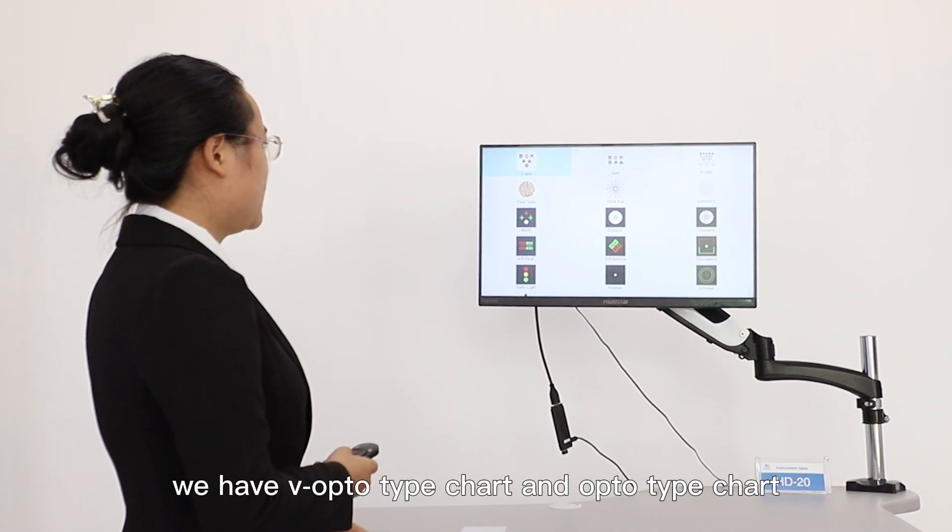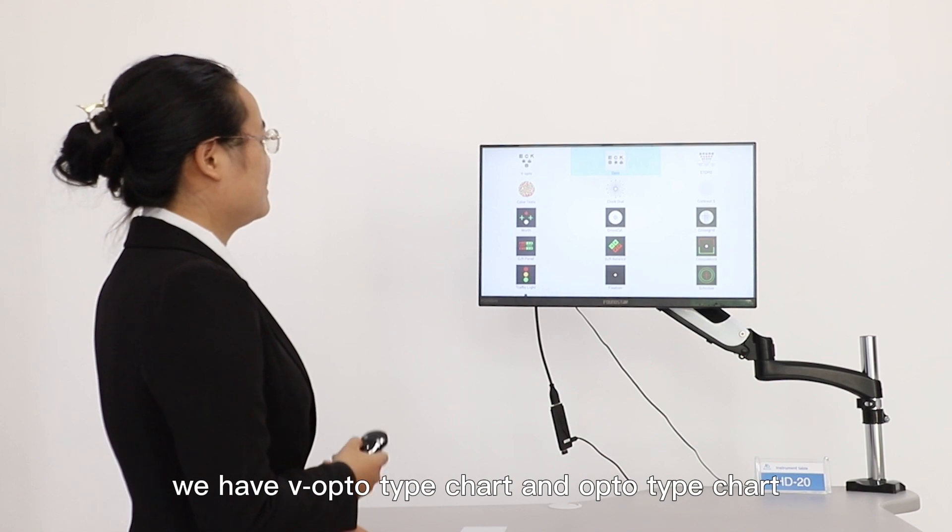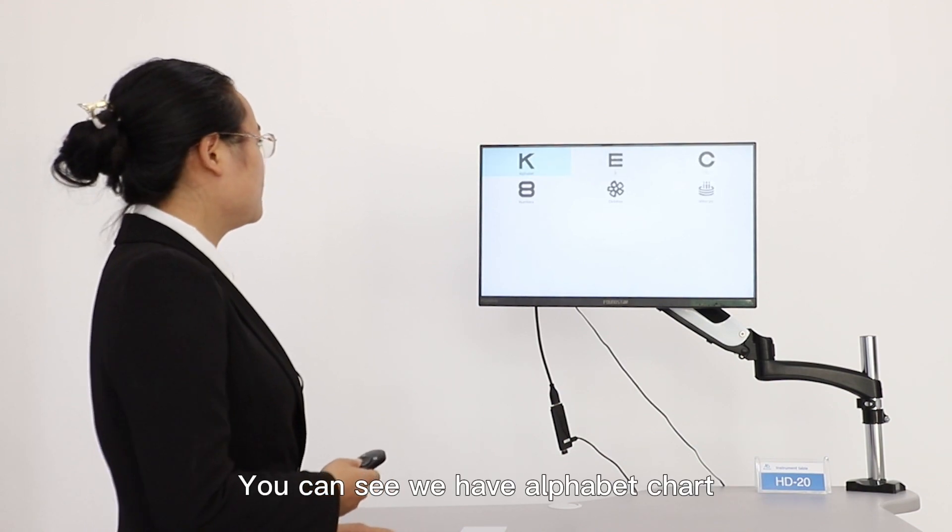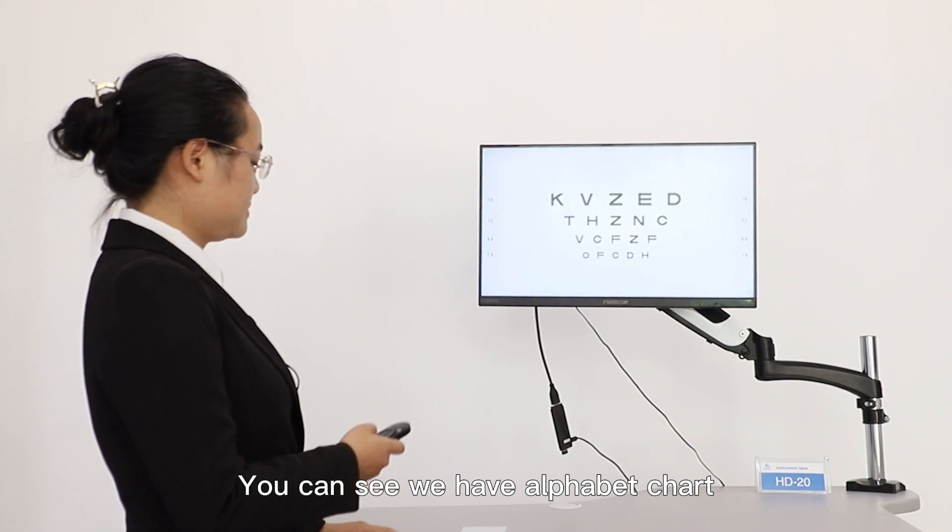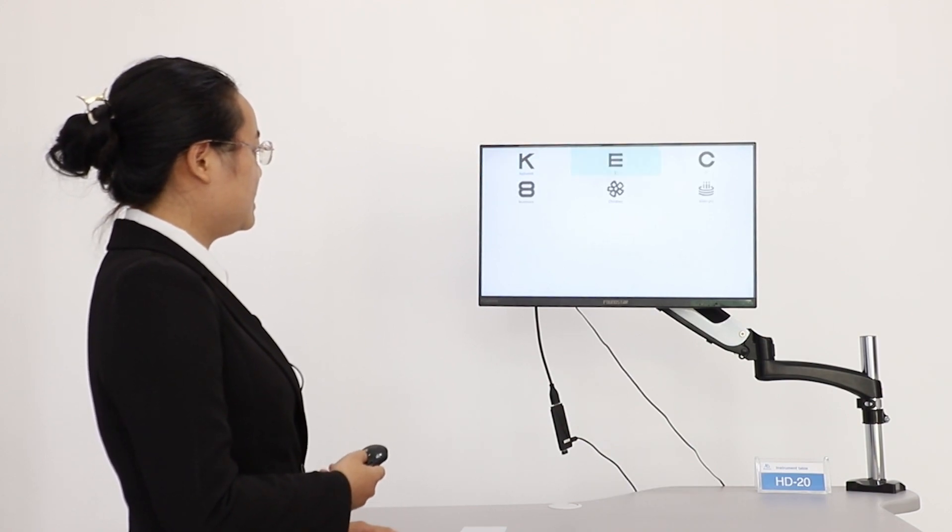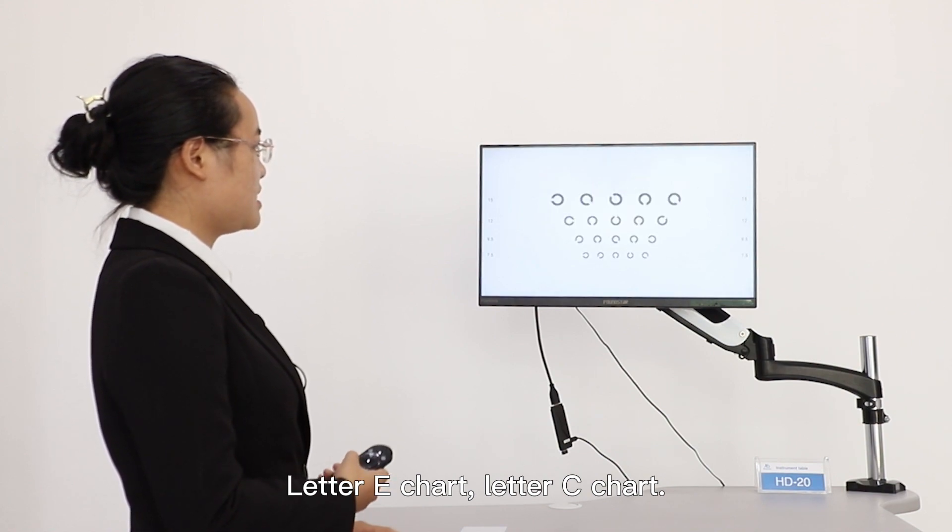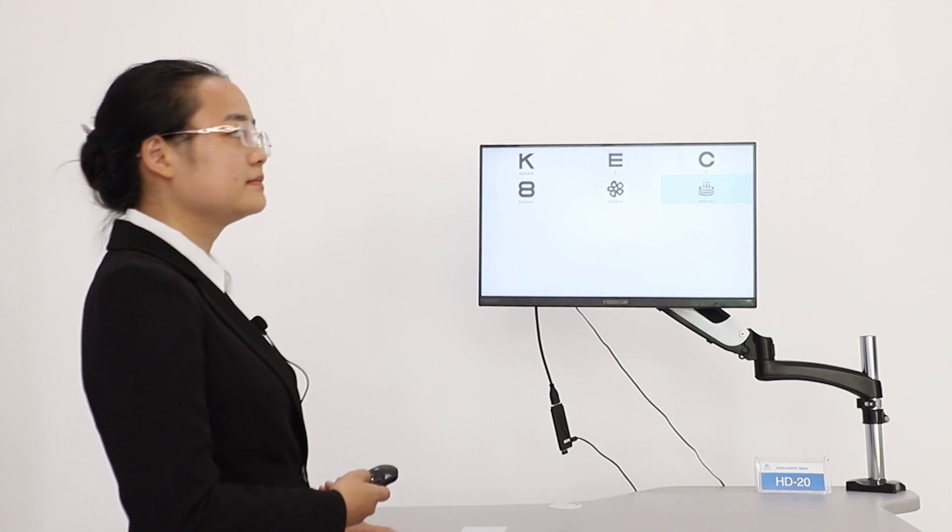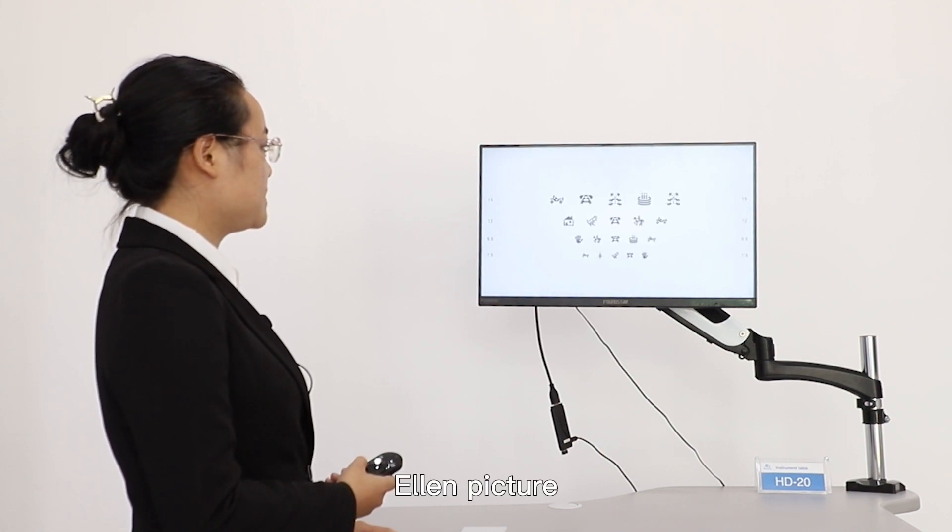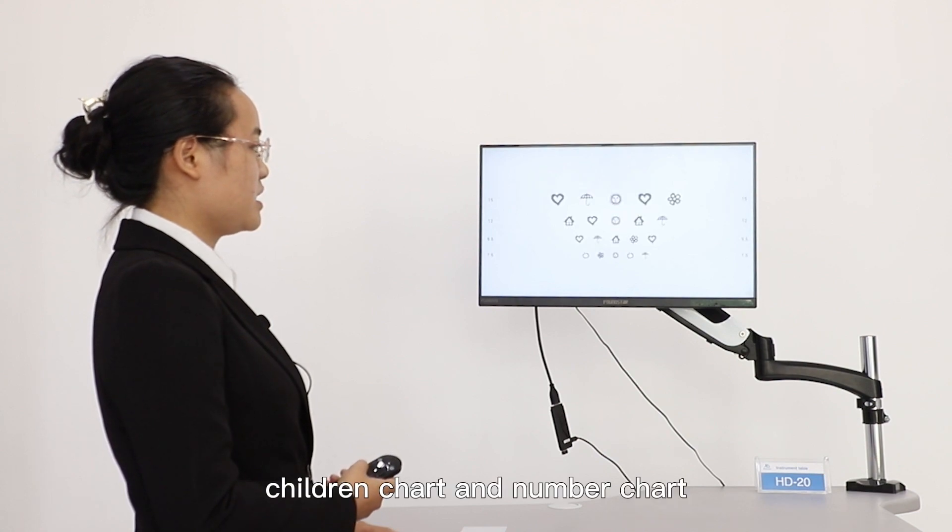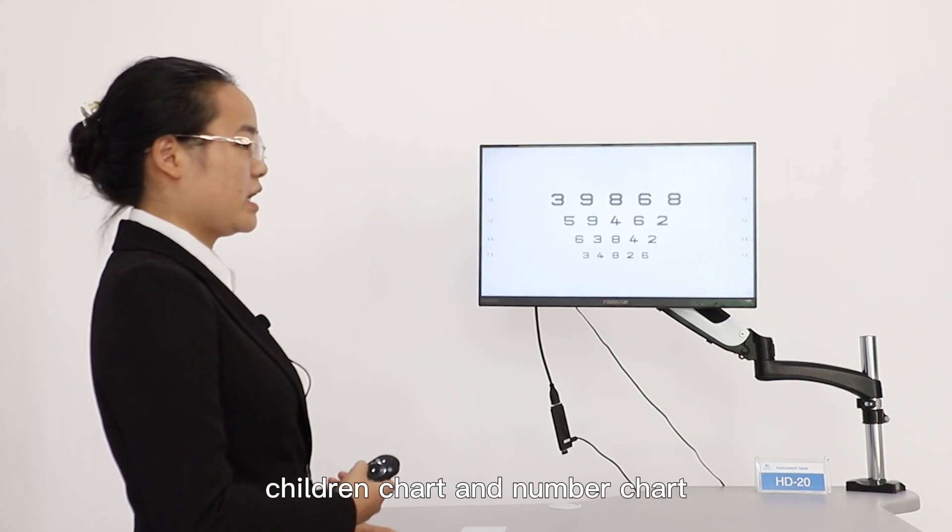For vision chart, we have V-optotype chart and optotype chart. Here you can see, we have alphabet chart, letter E chart, letter C chart, island picture, children chart, and number chart.